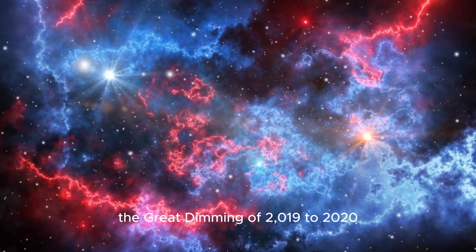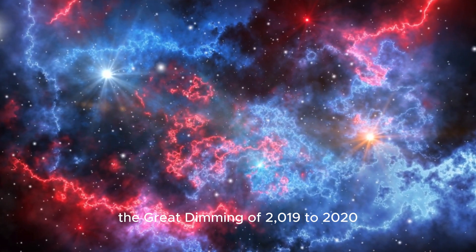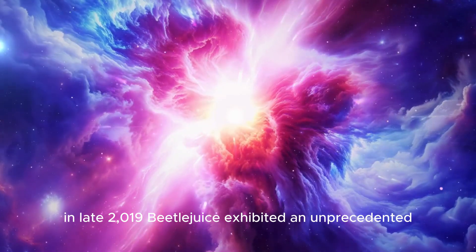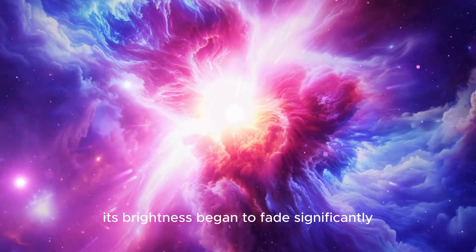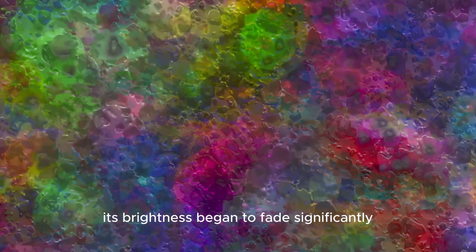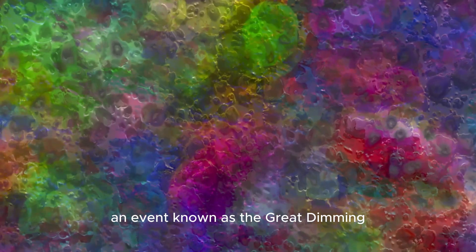In late 2019, Betelgeuse exhibited an unprecedented and dramatic change. Its brightness began to fade significantly, an event known as the Great Dimming.